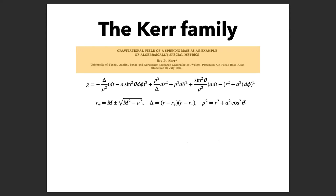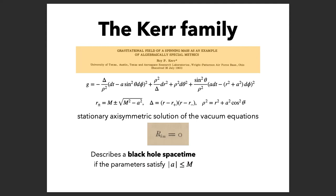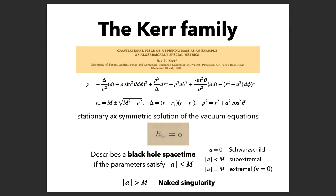Let's begin with the sub-extremal stability story. This is the Kerr family — the Kerr metric that we all know and love. This is a family of stationary axisymmetric solutions to the vacuum equations describing black hole spacetime if the parameters satisfy |a| ≤ m. Of course a = 0 is the Schwarzschild case, |a| < m strictly is what we call sub-extremal, and when you have equality |a| = m this is the extremal case.